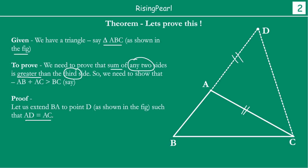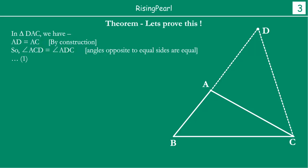Why did we do this? In triangle DAC, AD is equal to AC by our construction. Since two sides are equal, triangle DAC is an isosceles triangle. We know that angles opposite to equal sides are equal. Therefore, angle ACD is equal to angle ADC.